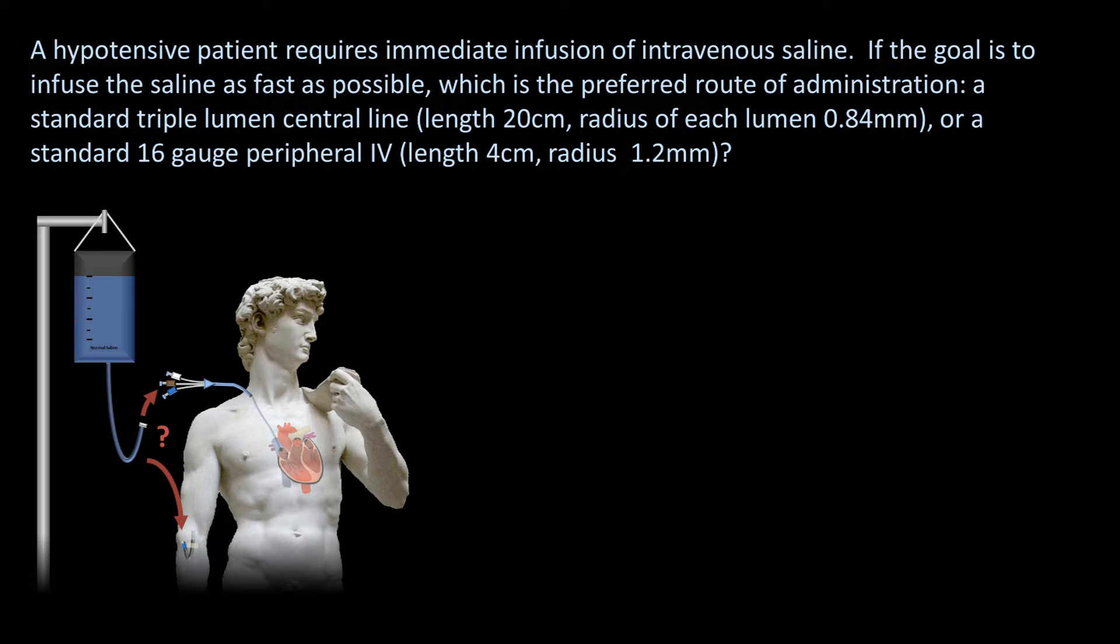Let's start with a corollary to Poiseuille's Law. We can compare the resistance to fluid in the central line with resistance to flow in the peripheral IV. If this ratio is greater than 1, resistance in the central line is greater, so the peripheral IV would be better for rapid infusion. And if the ratio is less than 1, resistance in the IV is greater, so we should go with the central line.